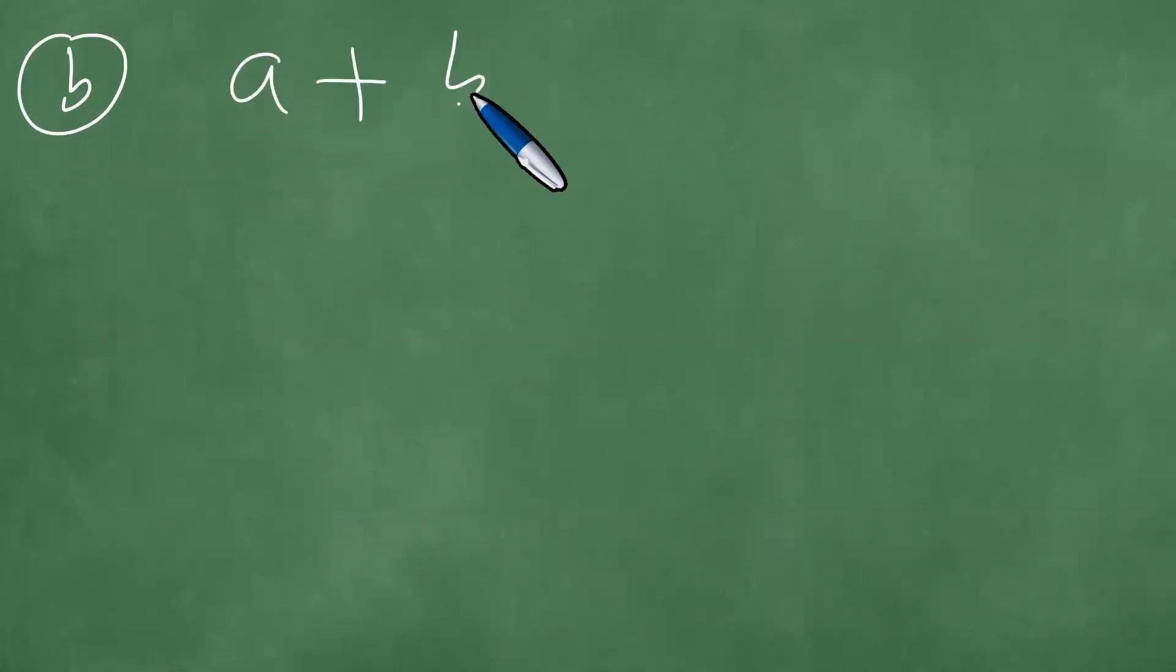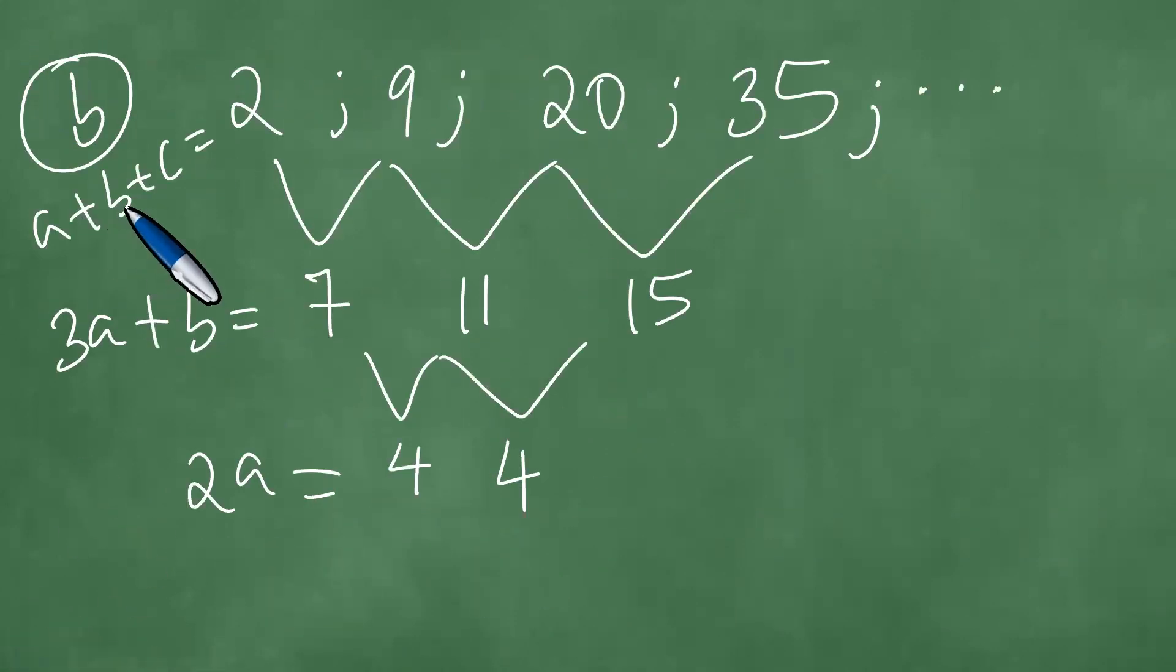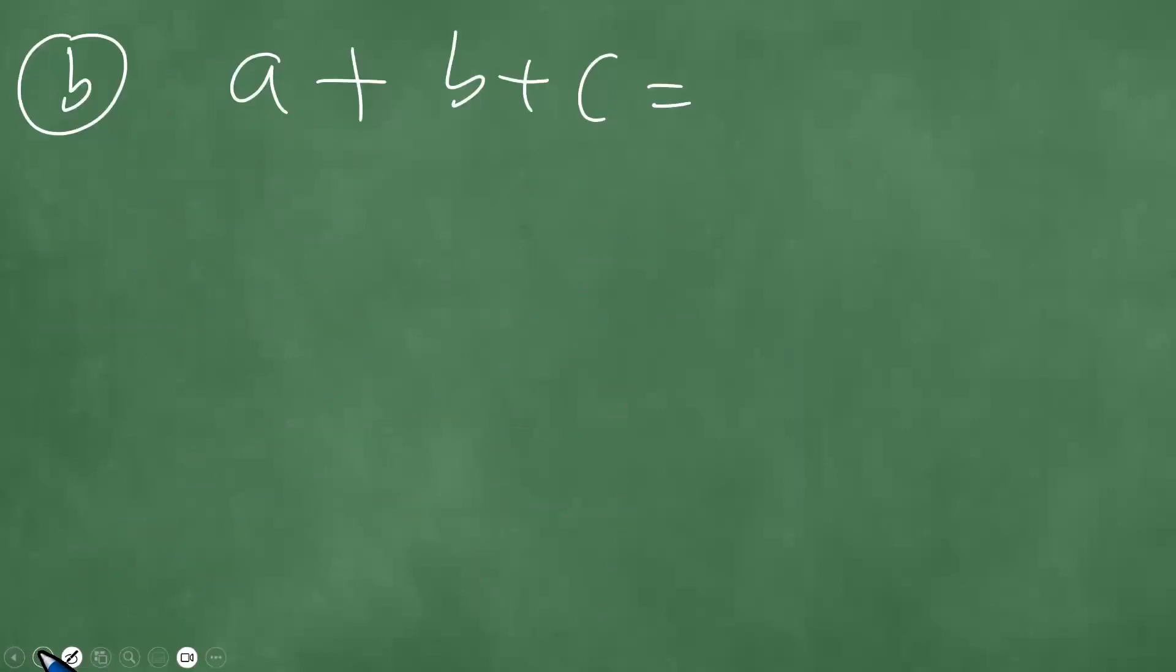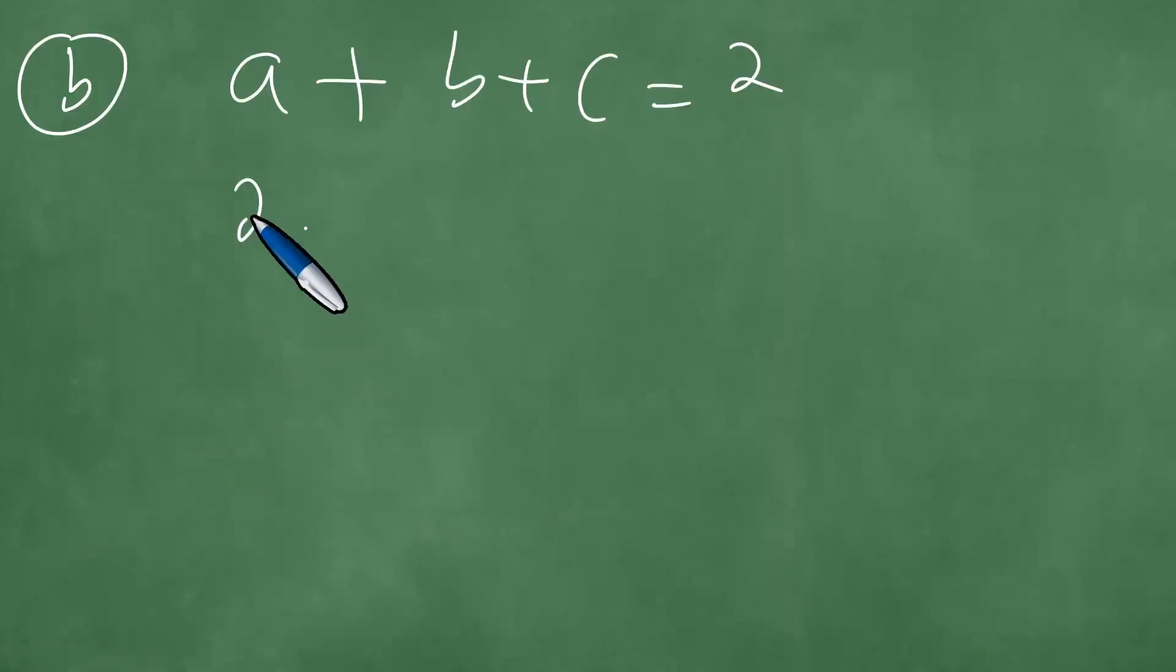We have a plus b plus c equals 2. We have a plus b plus c equals the first term of the quadratic, so a plus b plus c equals 2. Since a equals 2 and b equals 1 plus c equals 2, this means c equals minus 1.